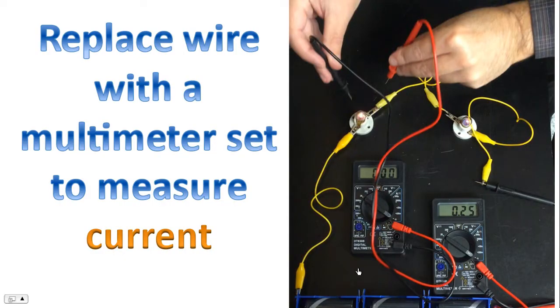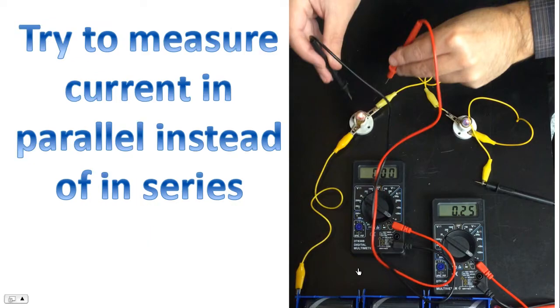Now we're going to do another demonstration. But this time, instead of using a wire, we're going to use a multimeter. We're going to set the multimeter to measure current. Notice, in fact, that both multimeters are set to the exact same settings, measuring current. So effectively, we are going to try to measure current in parallel instead of in series.